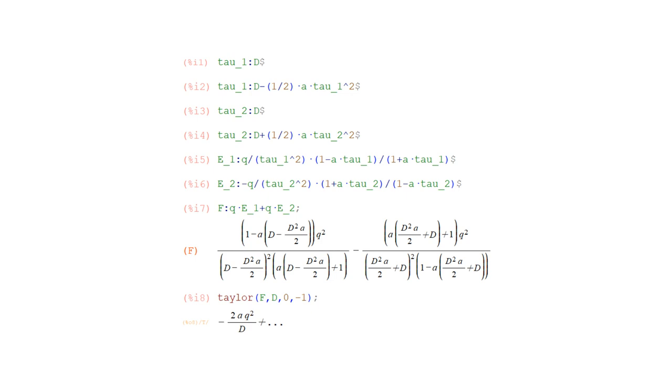We will do the calculations using the open-source computer algebra system Maxima. We solve the tau equations iteratively to sufficient accuracy for our purposes. First set tau-one equal to D, then substitute this value into the equation tau-one equals D minus one-half A tau-one squared. Do the same for tau-two.